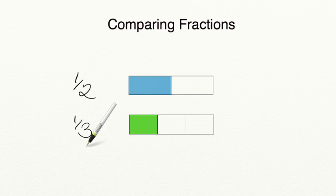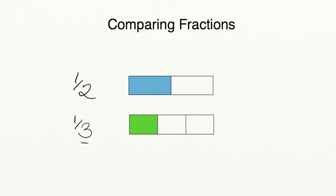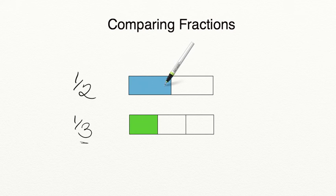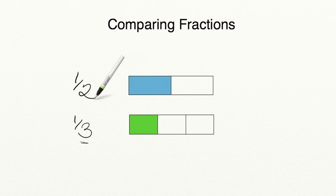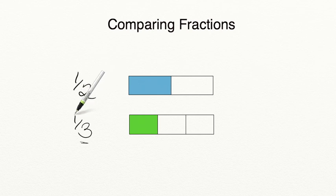Notice that the larger your denominator is, the smaller your pieces are going to be, because you have more pieces in the whole. So if we compare one-half and one-third, we can see that one-half is greater than one-third — our fraction bar shows more is shaded in, and our denominator says there are only two parts in the whole instead of three. With a numerator of one, one-half is greater than one-third.